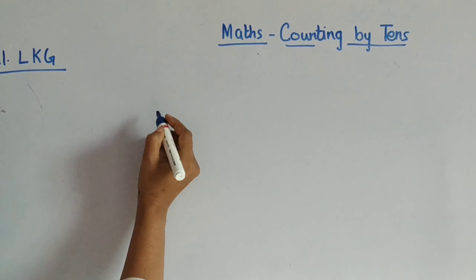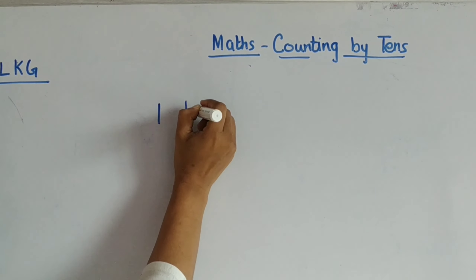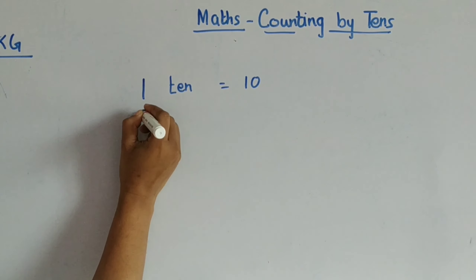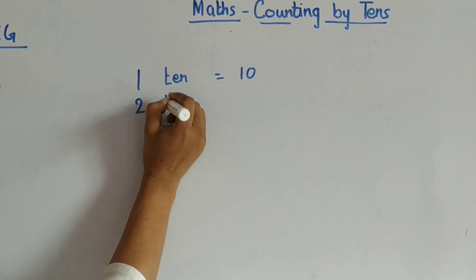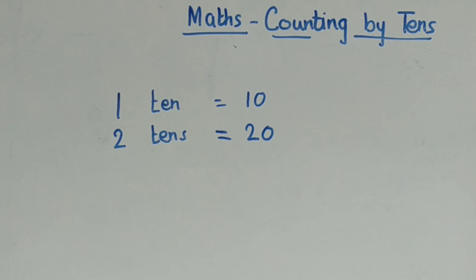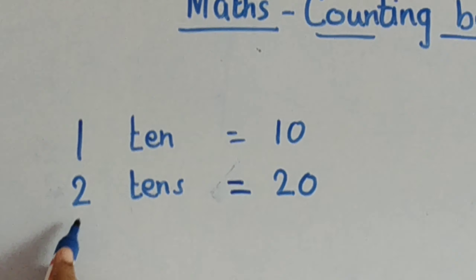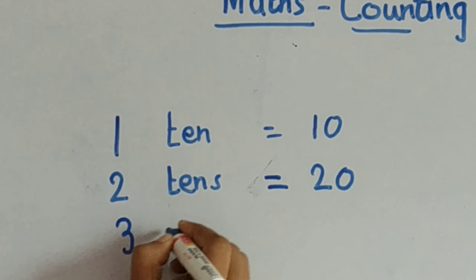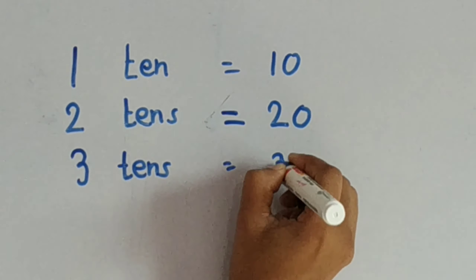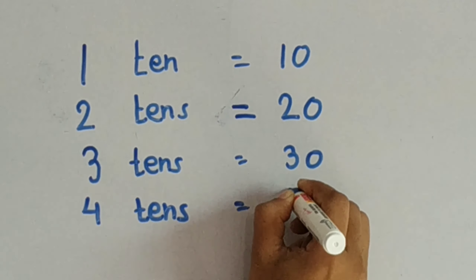In my previous video we started. One ten — one ten is how much? Ten. Then two tens: children, please repeat with me. As I say, you also say along with me. Two tens: 20. Three tens: 30. Four tens: 40.